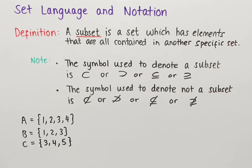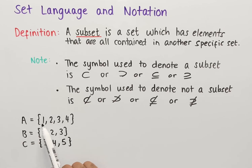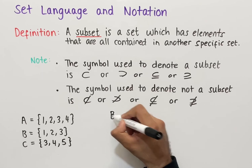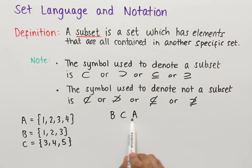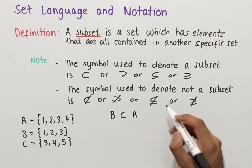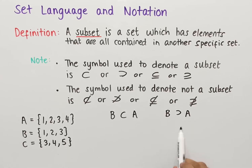We have three sets A, B, and C with some numbers inside. We can say that B is a subset of A since every element in B — so 1, 2, and 3 — is contained in set A. Set A also contains 1, 2, and 3, so we would write 'B is a subset of A' using the correct symbol.